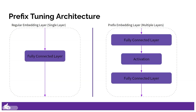Empirically, it has been observed that directly optimizing the single fully connected layer may not always yield the best results. In fact, it can sometimes lead to a slight drop in performance. In order to overcome this limitation, multiple fully connected layers are introduced with non-linear activation in between. This change plays a crucial role in guiding the update of the embedding layer.